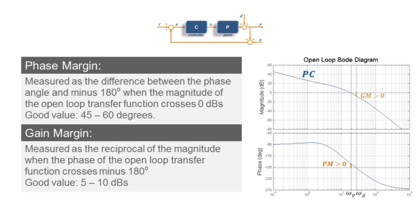The gain margin is measured as the reciprocal of the magnitude at the point where the phase crosses minus 180 degrees. The reciprocal in a logarithmic scale means a sign change, so for stability the gain margin needs to be a positive value. Anywhere above 5 dBs is usually recommended.